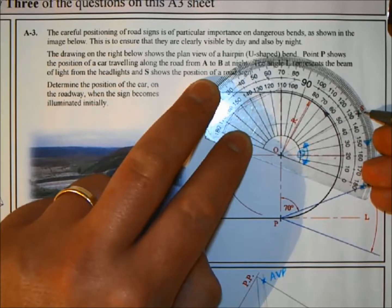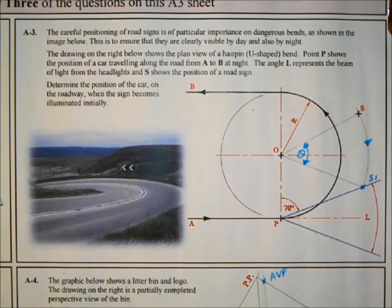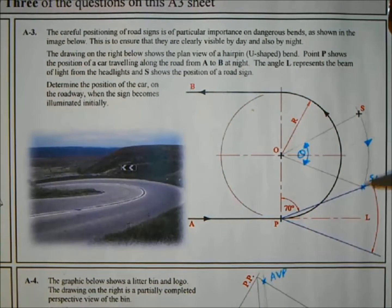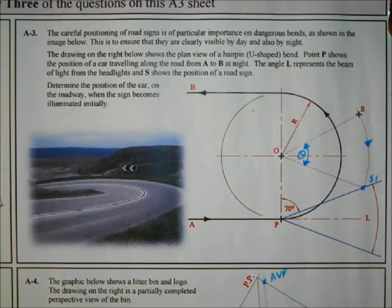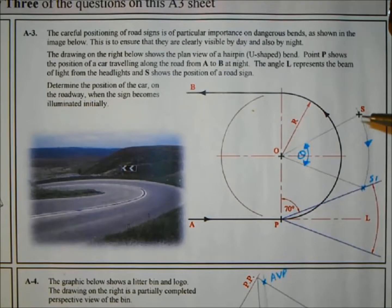By rotating point S down, I've seen how many degrees I need to rotate point P around point O to see where S is visible. We've brought the sign down to where the car is, and by finding that angle I now know how far to rotate the car to where the sign is originally placed. So that angle which we said was 47 degrees, we need to rotate that around point O again.